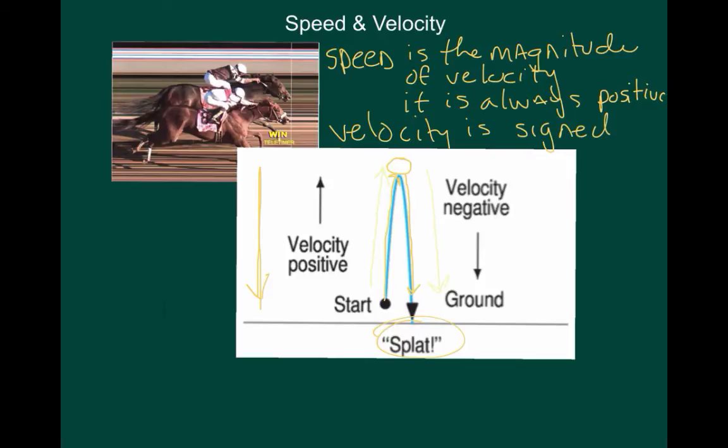When velocity, in moving in one direction, can be positive. So here in our example, as the grapefruit moved up, its velocity was positive. Now, keep in mind, the speed was going down, but the velocity had a positive value. And then, as the grapefruit started going downward, its velocity was negative. The speed was increasing, but the velocity was negative. So, let's keep that in mind.